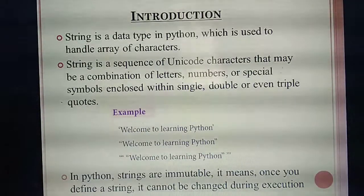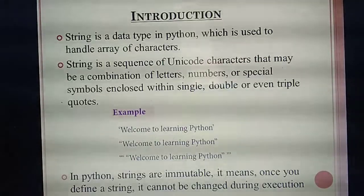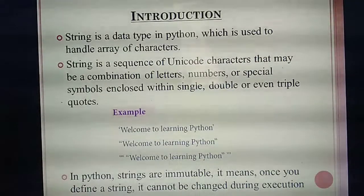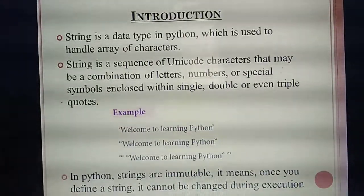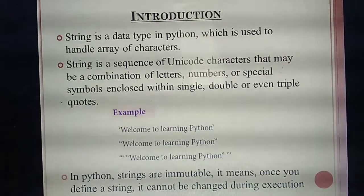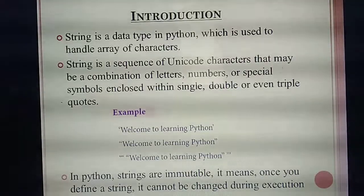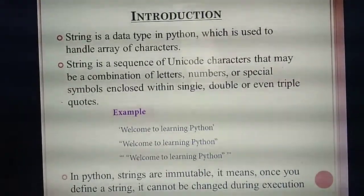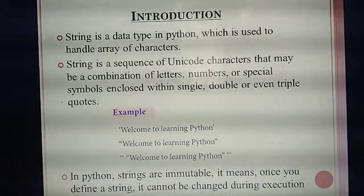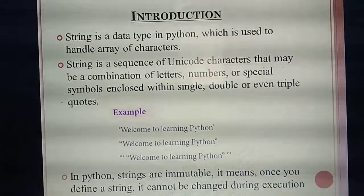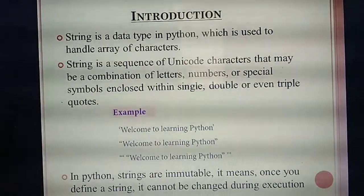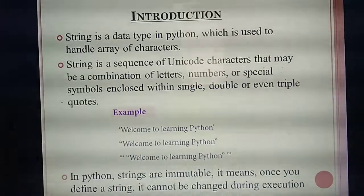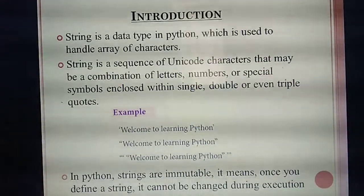What you need to remember: you should enclose the letters, numbers, or symbols between single, double, or triple quotes. Either you should enclose the characters in single quote, double quote, or triple quote. If you are using strings in your program, you should enclose the particular string in either single, double, or triple quotes.